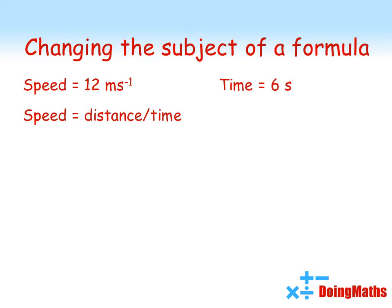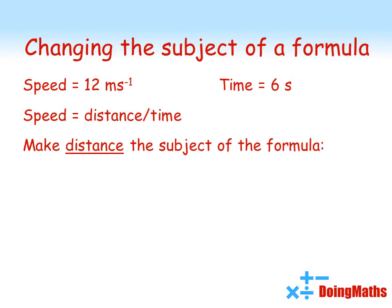To work out the distance traveled, we want to rearrange this formula so we can get it in the form distance equals something involving speed and time. This is called making distance the subject of the formula.